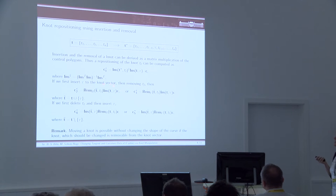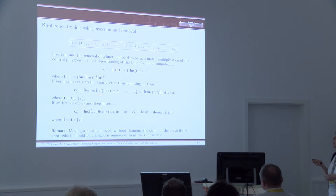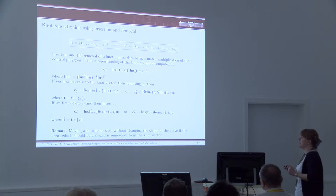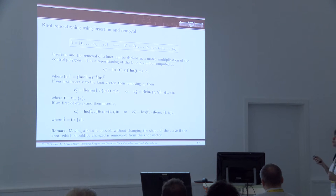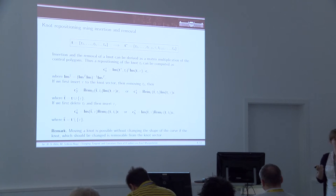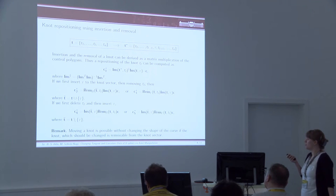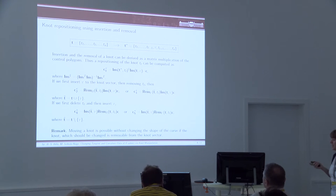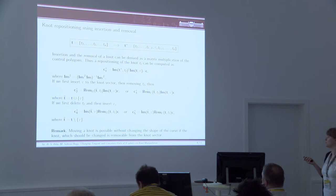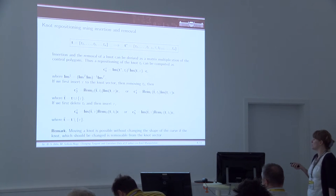A similar technique inserts a new node value but removes the old one using a recursive computation going backward or forward on the control polygon. If we cannot remove the node without changing the shape of the curve, these techniques give us different results — different curves — but all curves are approximating the input curve. The other possibility changes the order: first we remove the node and then insert it, also representable by matrix multiplications on the control values.